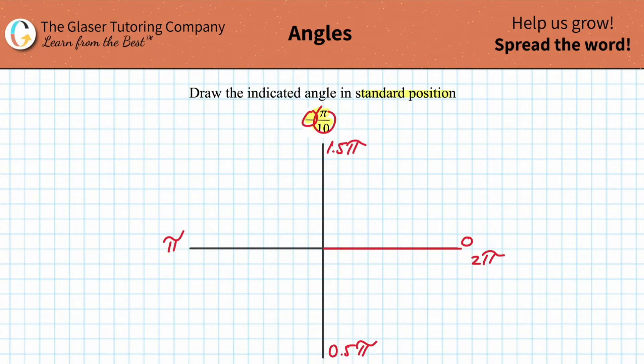Now I need to draw an angle of negative pi over 10. Isn't this the same thing as saying negative one over 10 pi? What's this in terms of a decimal? Well, it's just negative 0.1 pi. So the question is, where does negative 0.1 fall?